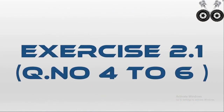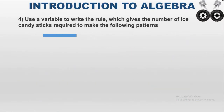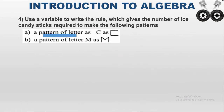Part 4, Exercise 2.1. Question number 4: use a variable to write the rule which gives the number of ice candy sticks required to make the following patterns — a pattern of letter C and a pattern of letter M. The problem involves using ice candy sticks to make patterns. A pattern means a repeated sequence, and we have to write the general term or general rule using variables. Variables are values that change depending on the situation.